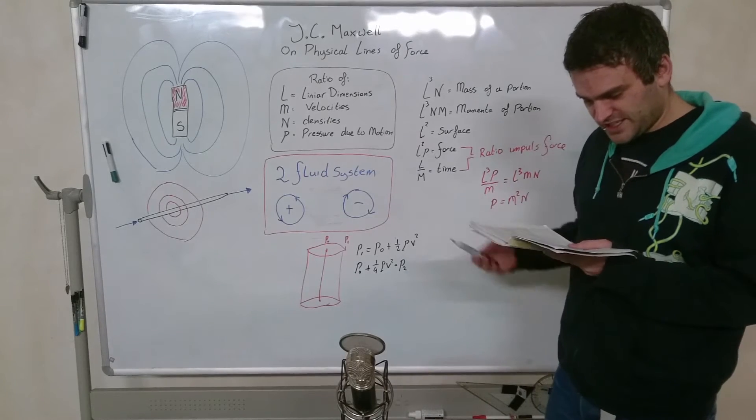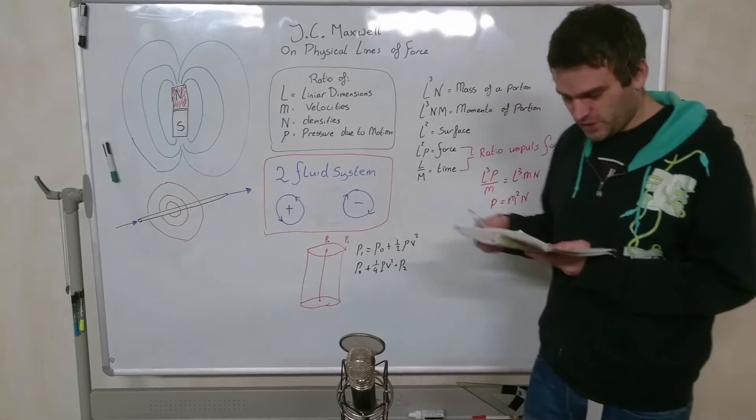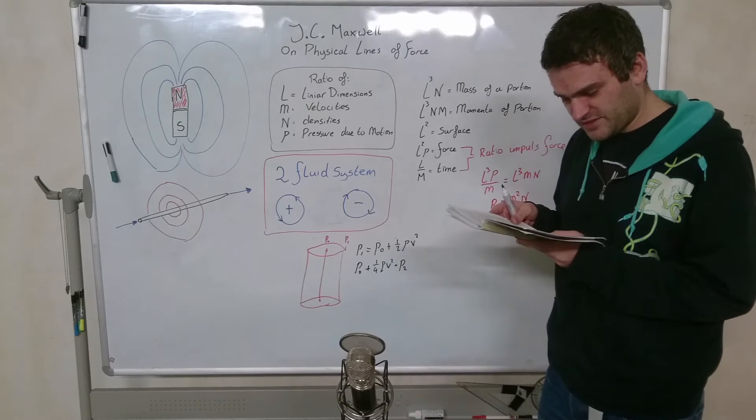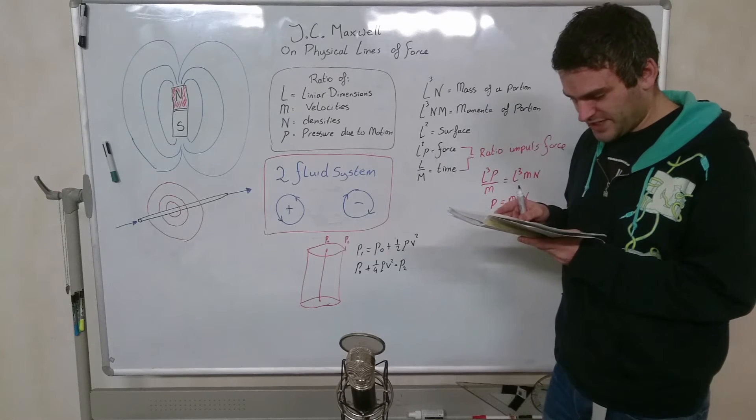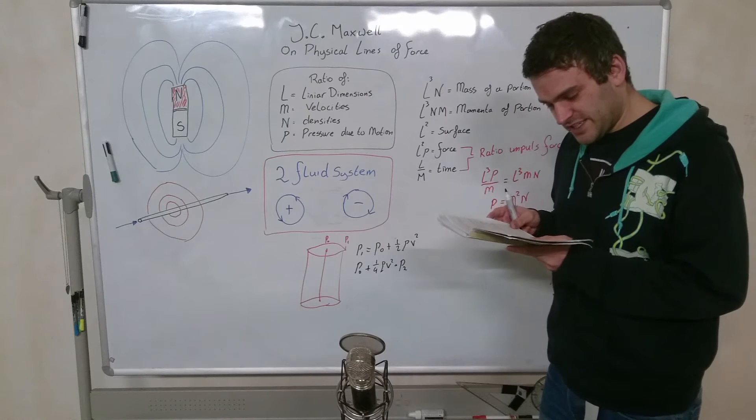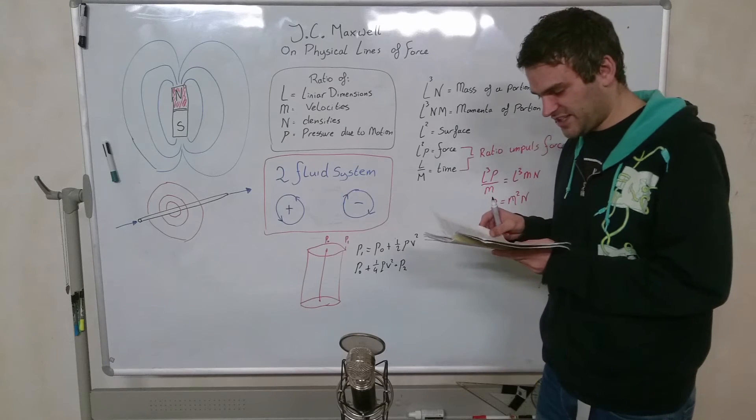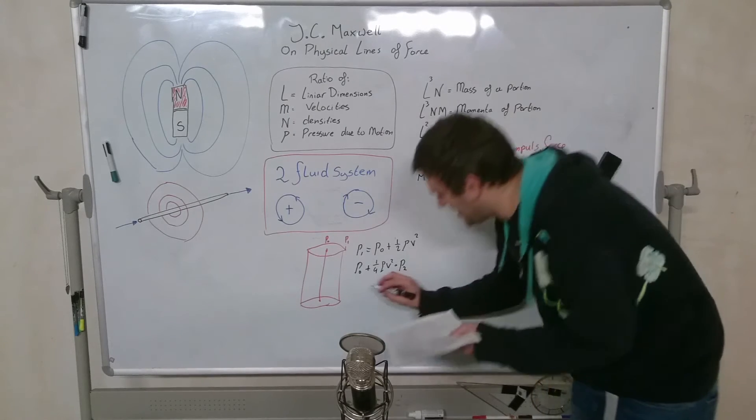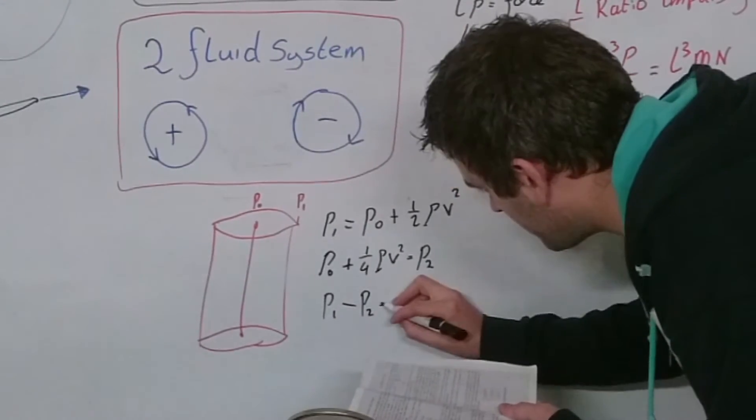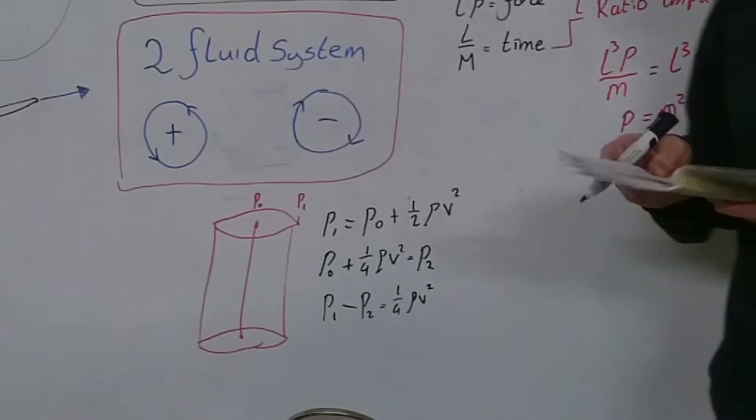If a number of such vortices were placed together side by side with their axis parallel, they would form a medium in which there would be a pressure P2 parallel to the axis and a pressure P1 in any perpendicular direction. If the vortices are circular and have uniform angular velocity and density throughout, then we can say that P1 minus P2 would give us a quarter rho V squared.